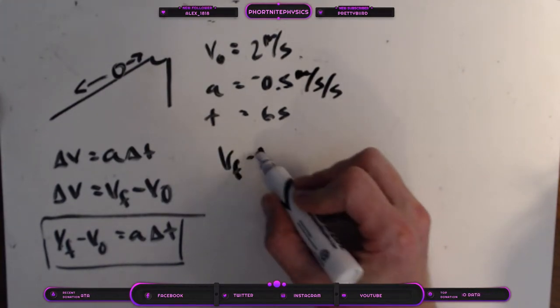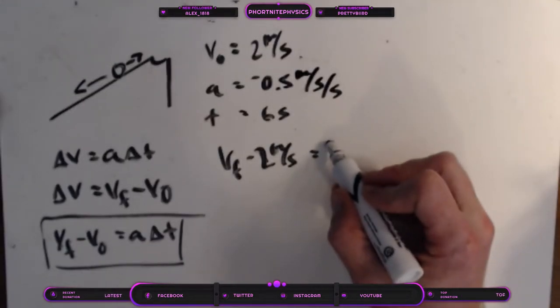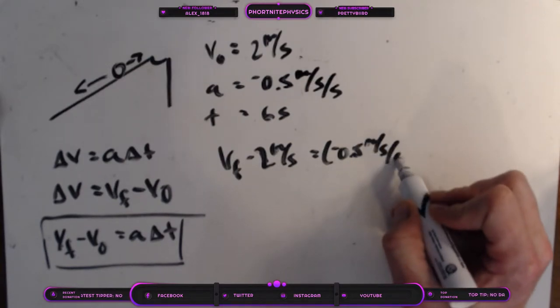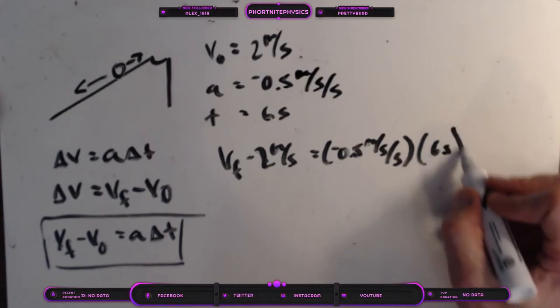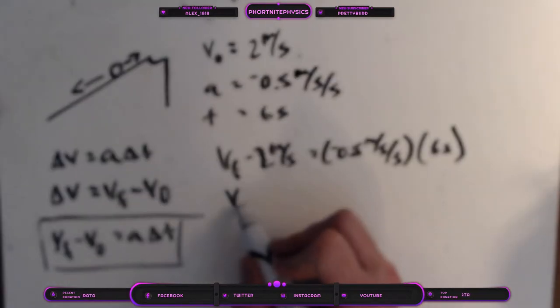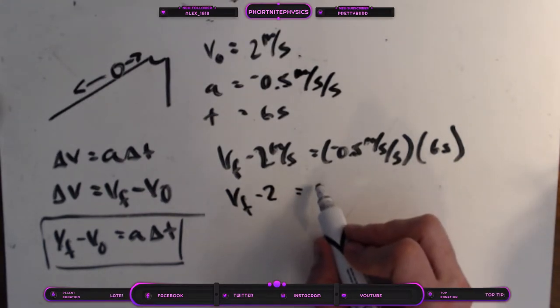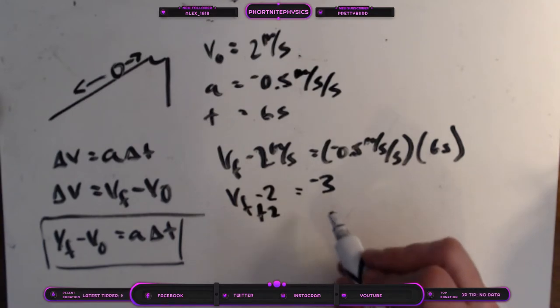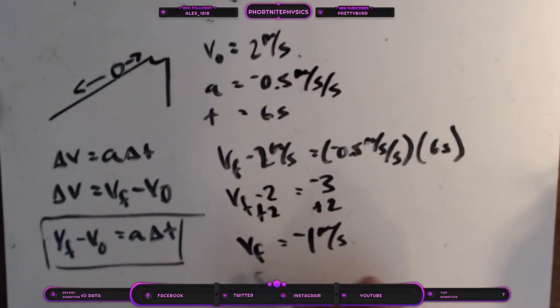So now we're back to using this version of our equation right here. And we just do the same thing again. Vf minus 2 meters per second equals negative 0.5 meters per second per second multiplied by 6 seconds. So we have Vf minus 2 equals negative 3. Add 2 to both sides. And this time we have a final velocity of negative 1 meter per second.